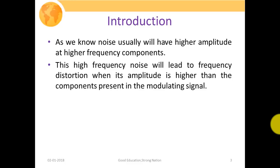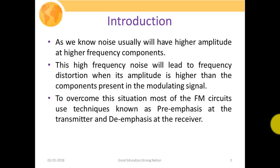So obviously, if the noise signal amplitude is much greater than our message signal amplitude, then the effect of noise will be more, as we are going to have a much more distorted signal. So to overcome this situation, most FM circuits use a particular technique known as pre-emphasis at the transmitter and de-emphasis at the receiver.